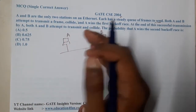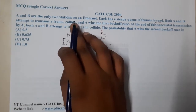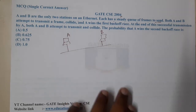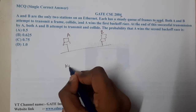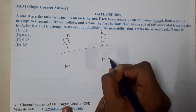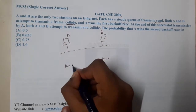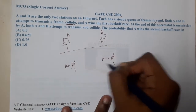Both A and B attempt to transmit a frame, they start sending, and they collide. Since they are talking about collision and backoff time, it is mostly ALOHA. Once they have started and collided, the k-value for both moves from zero to one.